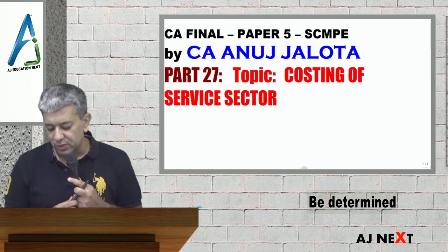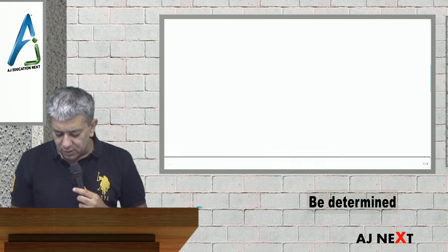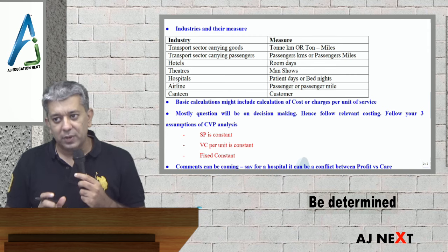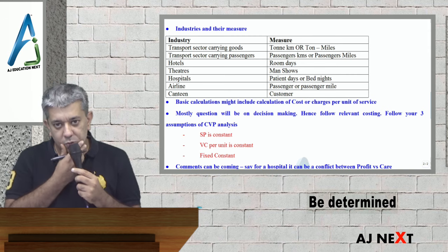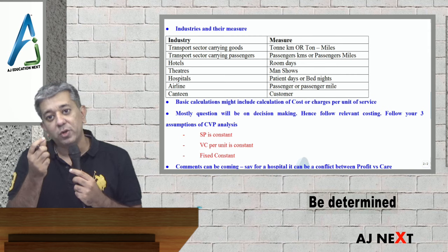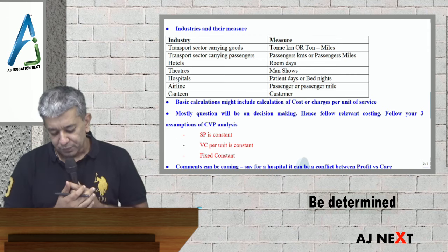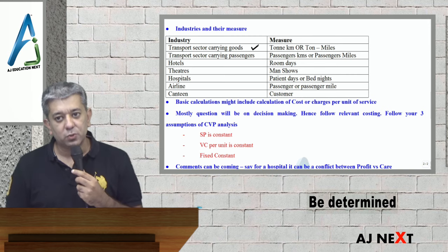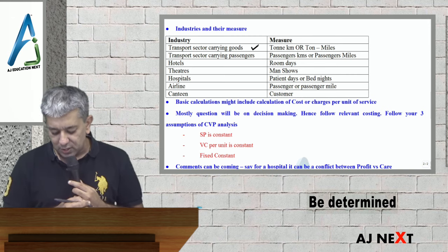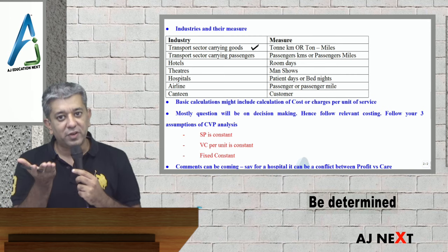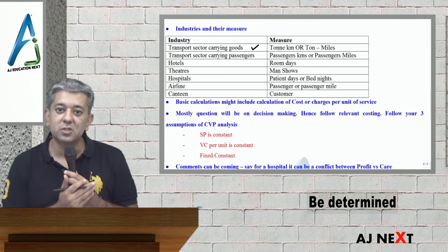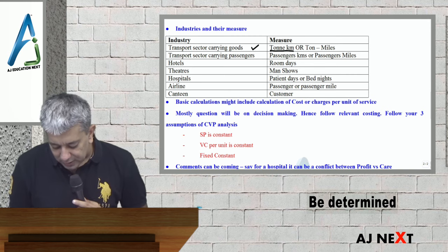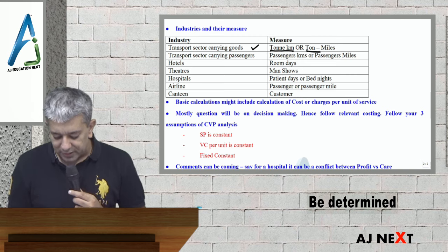IPCC mein aap logo ne usko operating costing shayad bol dete the. Now, few rules of this particular chapter. Har industry ka by default ek unit hota hai. So popular industries ka jo popular kind of unit hai, woh tum ko malum hona chahiye. Agar ek transport sector hai which carries goods, woh customers ko jab bhi charge karega, it will charge them based upon the weight, it will also charge them based upon kitna distance goods carry karwana hai. So therefore, waha pe ton kilometers aajayega, agar USA hoga toh ton miles aajayega.